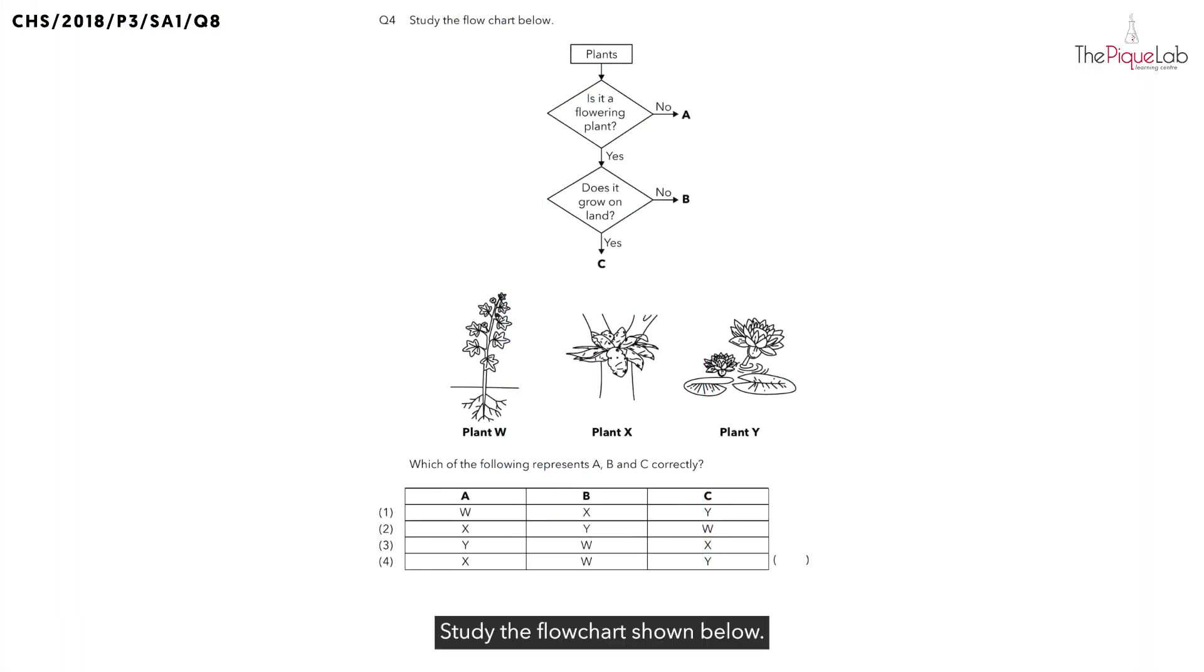Question 4. Study the flowchart shown below. They want us to find out which of the following best represents A, B and C correctly. Before we take a look at the options, let's look at the flowchart first.